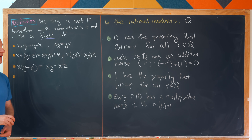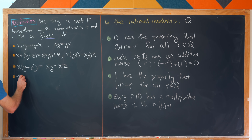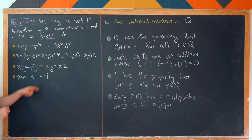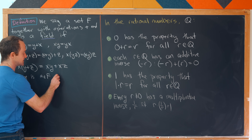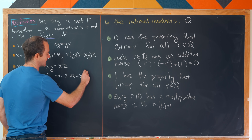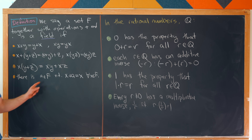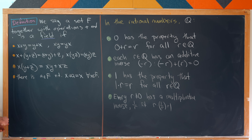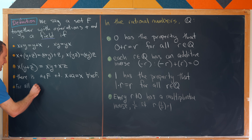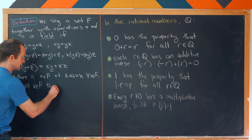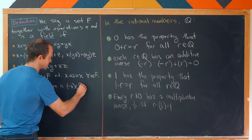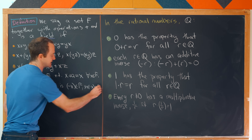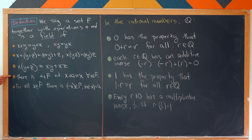First we need the additive identity. I'm going to call this element a. So there is an element a inside of F such that x plus a equals x for all x in the field — addition by this element a does not do anything, just like addition by zero. We also need inverses: for all elements x of the field there is a negative x also in the field where x plus negative x equals a. So that's our path back to this additive identity.